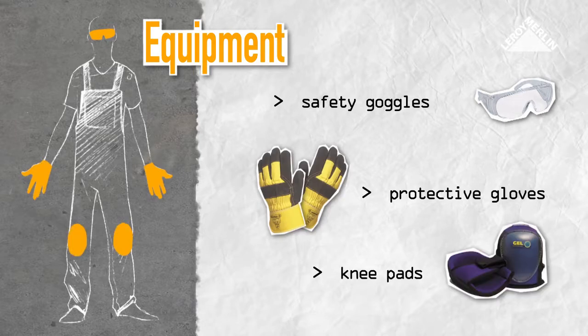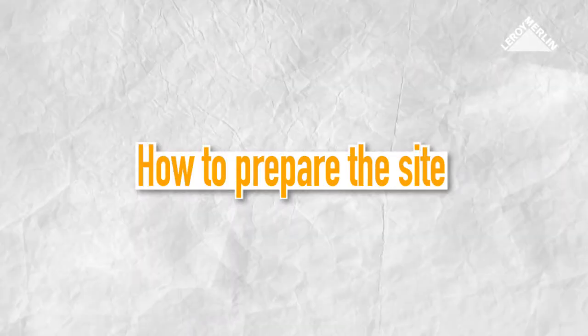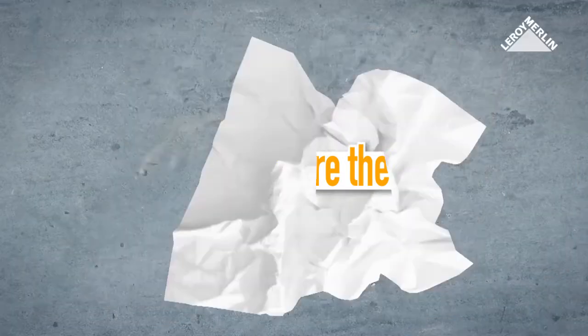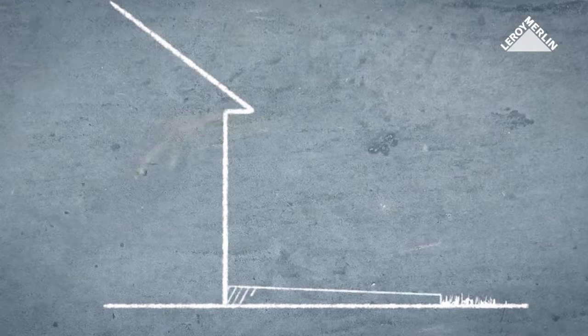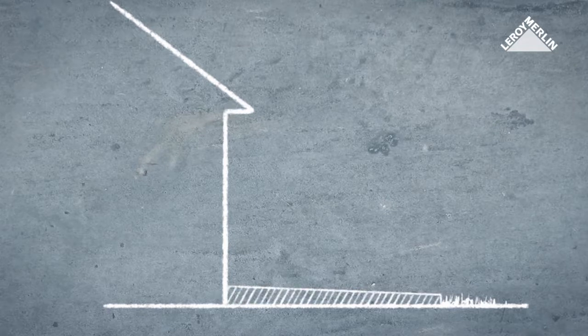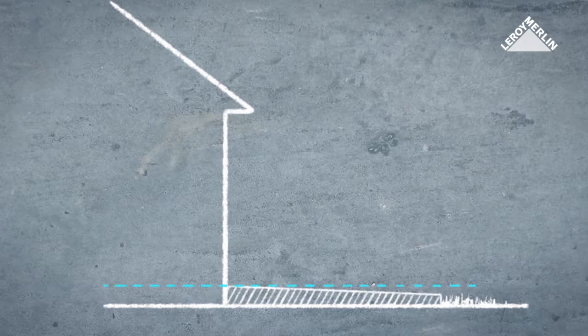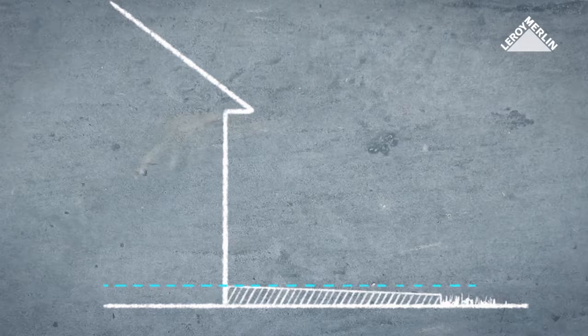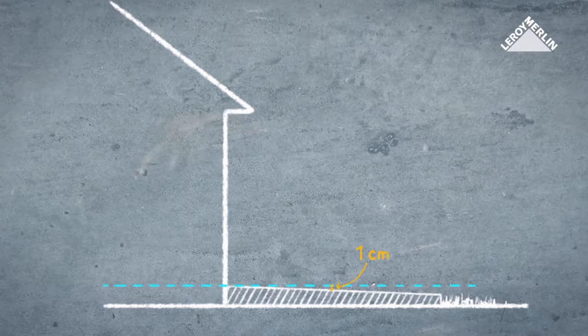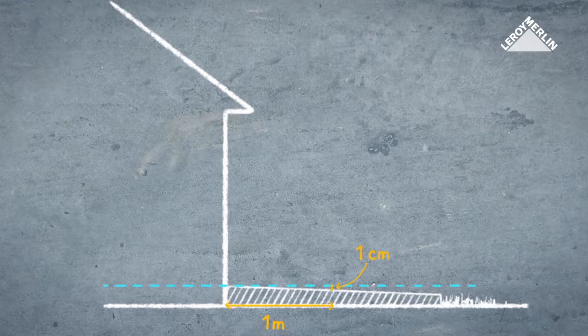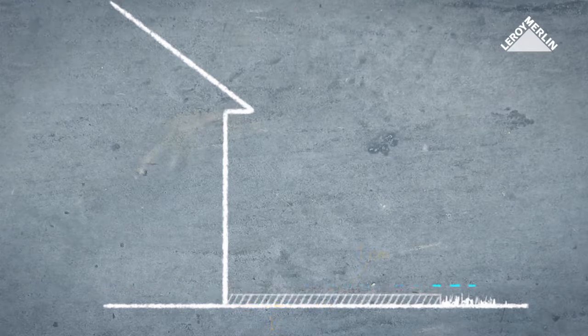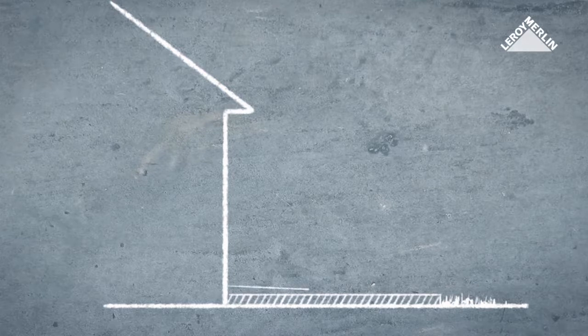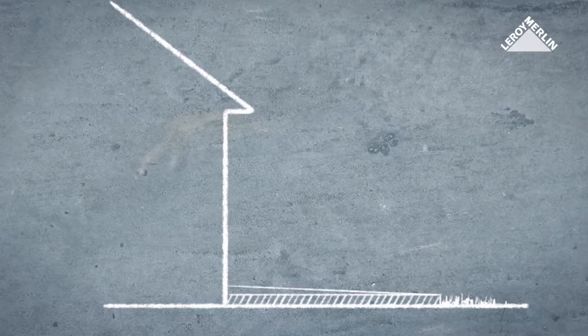Start by checking that your terrace has adequate rainwater drainage facilities. Check the slope by putting a spirit level on a long mason's ruler. A gradient of one centimeter per meter is enough. In the absence of a slope, before you start work you will have to create a screed which slopes from the house to the garden.